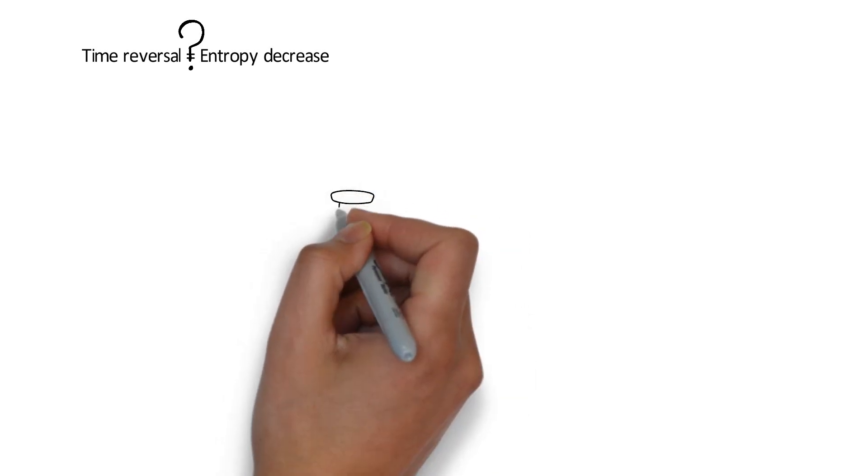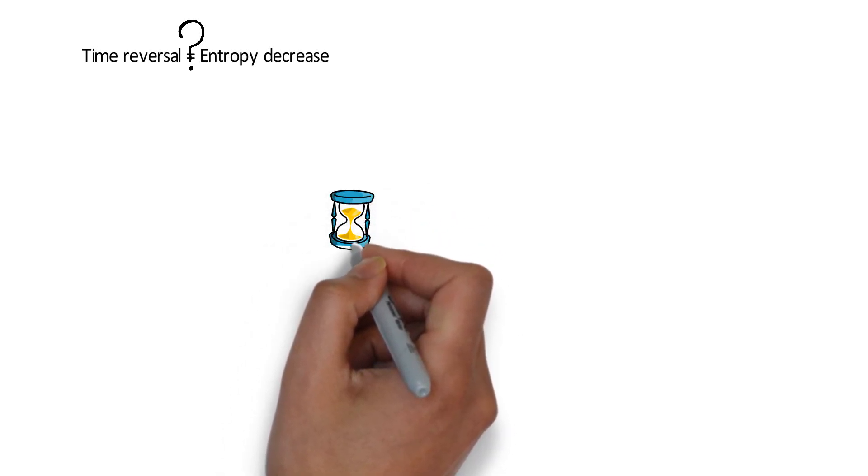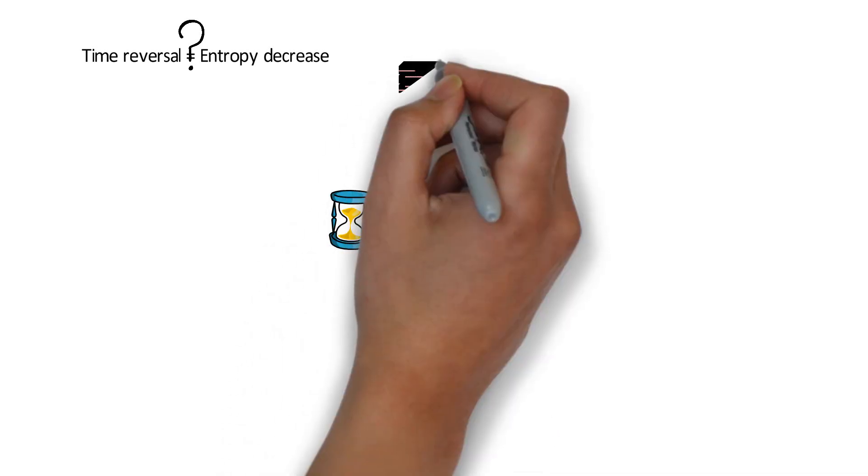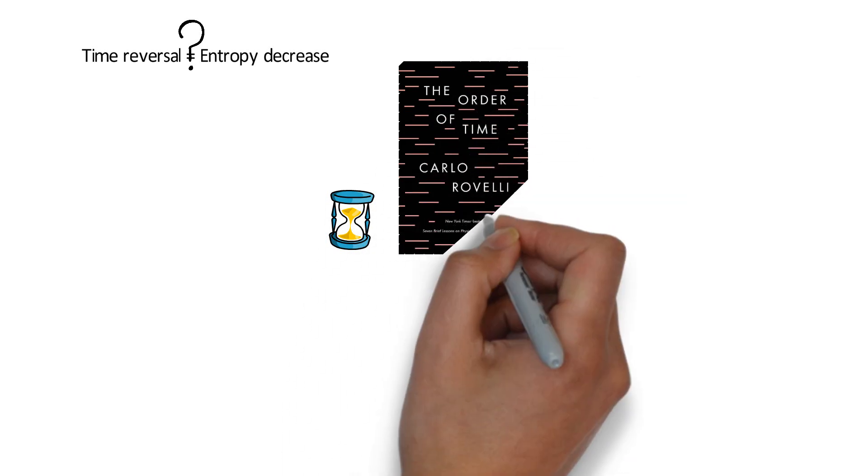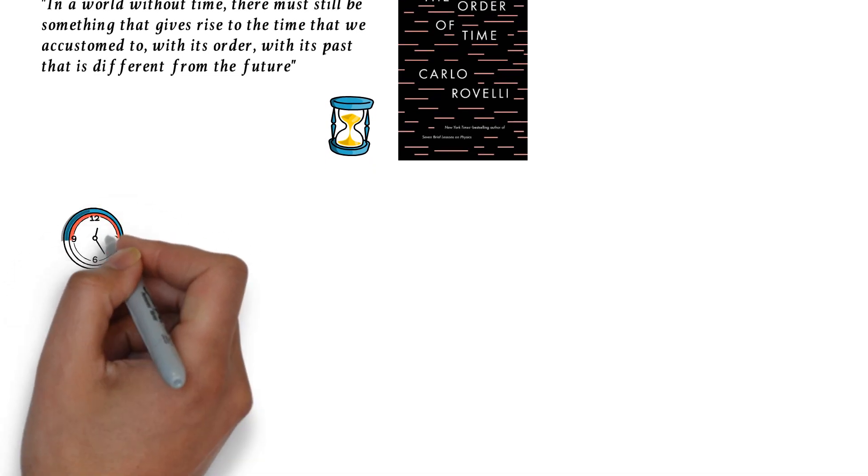And one way we can think about it is this. Entropy increase is something that we can perceive, but time is abstract. It's more like a construct or a derived variable. In the book The Order of Time, there is a quote that says, in a world without time, there must still be something that gives rise to the time that we are accustomed to, with this order, with this past, that is different from the future.